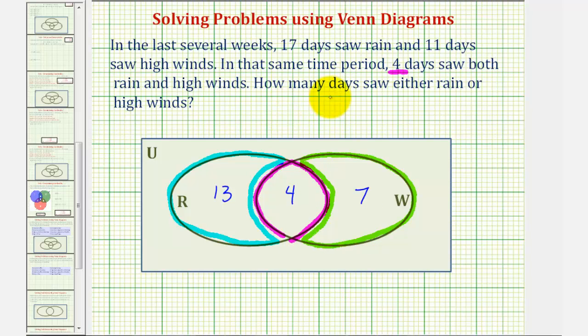Our goal is to find the number of days that saw either rain or high winds—the days that saw only rain, or rain and wind, or just wind. Using set notation, this would be the number of elements, or days, of R union W.